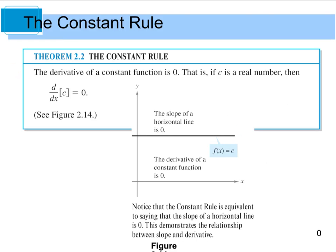The constant rule says that the derivative of a constant function is 0. A constant would be something like taking the derivative of f of x equals 3 or f of x equals negative 5 — something where you have no variable in your function. If you were to graph it, you're going to get just a horizontal line, because it's really the same thing as saying y equals 2 or y equals negative 6. It will just give you a horizontal line through y equals whatever number.